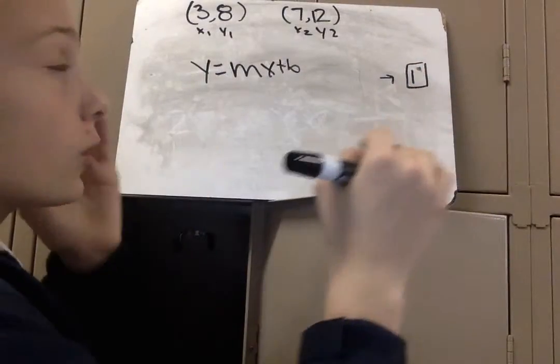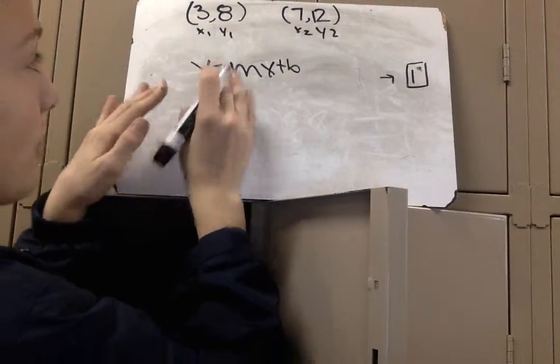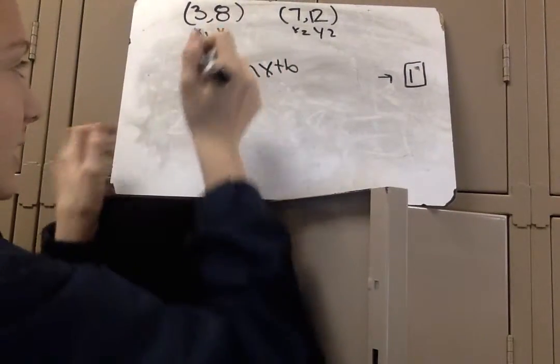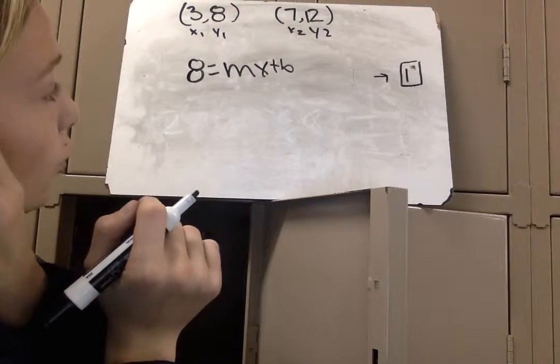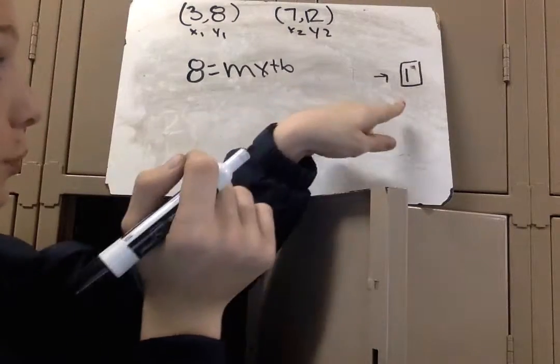We're going to pick between the two coordinates, and I'm going to pick 8 because it's a smaller number and it might be easier to work out. And then, we do know mx, and that's the slope. So, we are going to plug in 1.